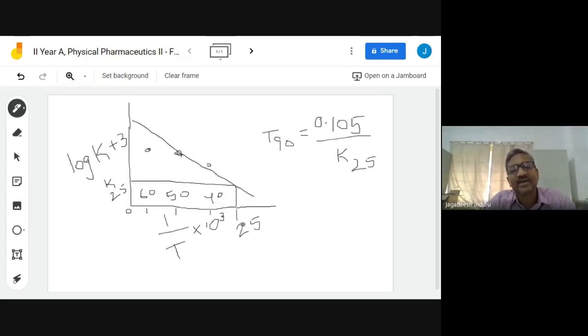Prediction of at 25 by drawing a vertical line here, taking a parallel line intersecting this, that you determine here. At this point you determine the antilog of that, you are going to get the k. K value here, by dividing 1.05 you will get a t90.